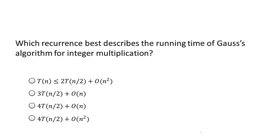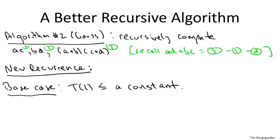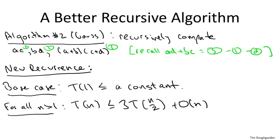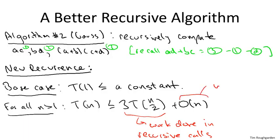The correct response for this quiz is the second one, namely, the only thing that changes with respect to the first recurrence is that the number of recursive calls drops from four down to three. A couple of quick comments. First, I'm being a little bit sloppy when I say there's three recursive calls, each on numbers with N over two digits. When you take the sums A plus B and C plus D, those might well have N over two plus one digits. Amongst friends, let's ignore that. Let's just call it N over two digits in each of the recursive calls. As usual, the extra plus one is not going to matter in the final analysis.